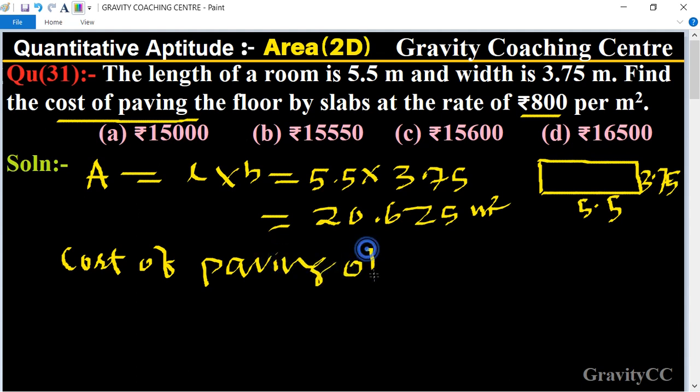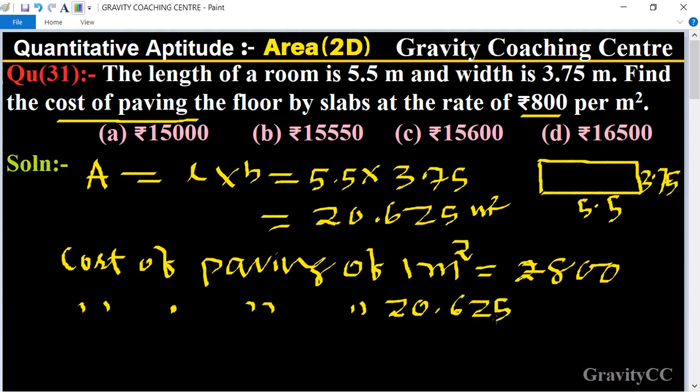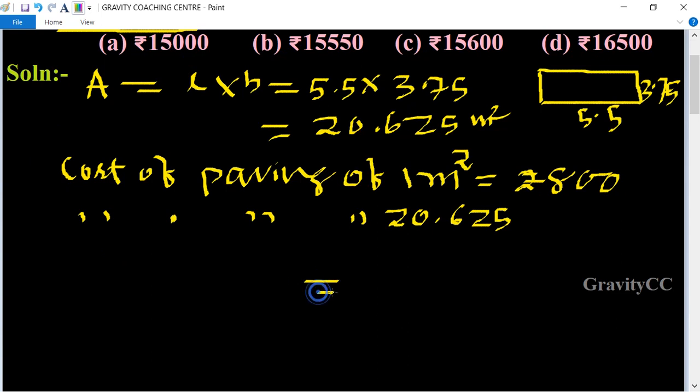The cost of paving one square meter is rupees 800. So the cost of paving 20.625 square meters equals 800 multiplied by 20.625.